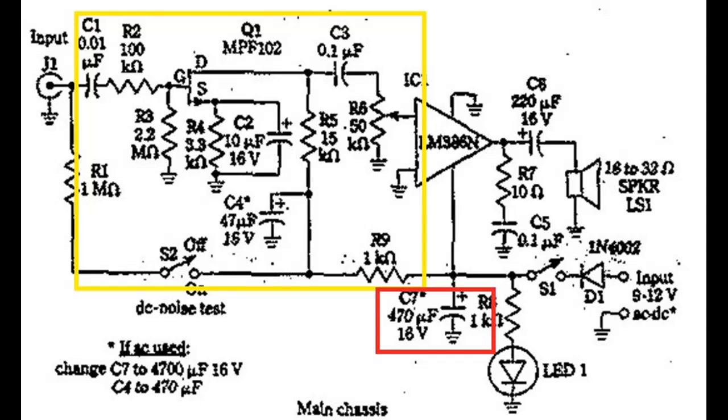Then we ran into another problem with the 10 microfarad capacitor in the source of the JFET. It was causing too much gain on stronger signals, and we had to take that out to decrease the gain so we weren't overdriving the LM380. But when we took that out, it decreased the sensitivity again - we were almost back to square one.